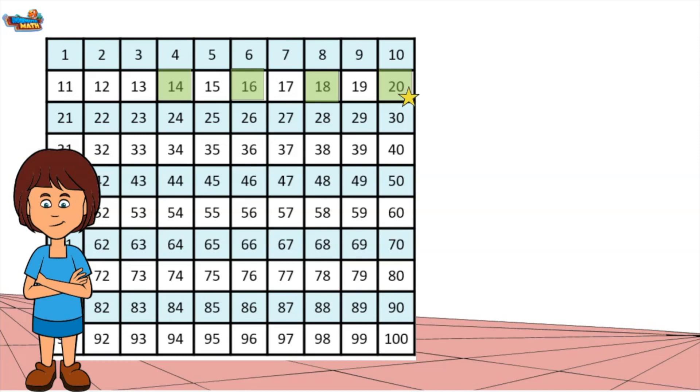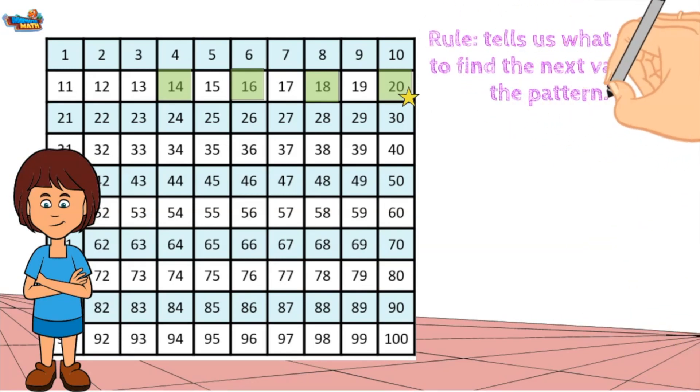Here is a number grid. The green squares represent the pattern being created. A pattern follows a rule. The rule tells us what to do to find the next value in the pattern.